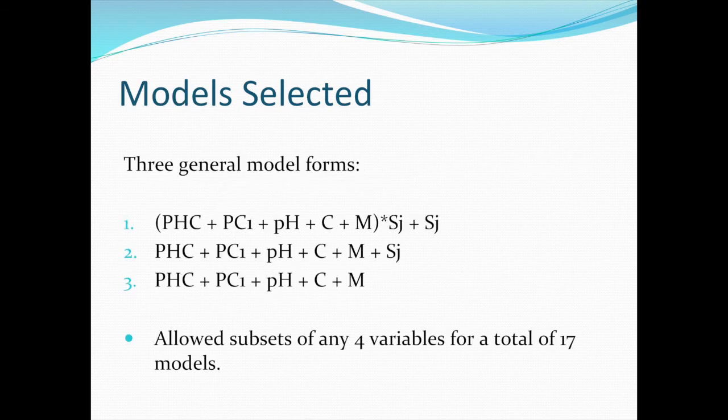I used three general model forms ranging from most complex to simplest. The top model allows for the effect of a contaminant or non-contaminant to vary from site to site — the term S refers to site and subscript J ranges from 1 to 3. The variables are PHC, the first principal component, pH, clay, and moisture. The last set of models does not allow for any site effects — throwing all data into one bin and analyzing simultaneously. For each of the three major model classes, I chose submodels with all possible combinations of the four explanatory variables, fitting a total of 17 models to each toxicity test response for the three species.